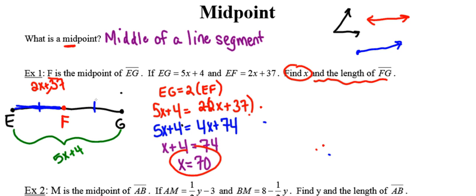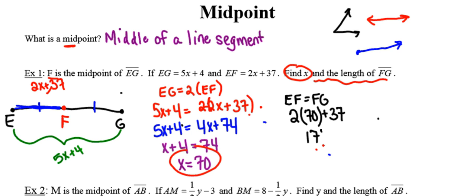If I go back to the picture I drew, I haven't represented the length of line segment FG in terms of X. However, I know that the distance between points F and G is exactly the same as the distance between points E and F. So in order to find the distance between F and G, I'm simply going to plug in 70 in place of X and then evaluate. So the length of line segment FG is 177.